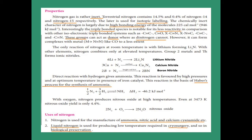When nitrogen reacts with oxygen, we get nitrous oxide, N₂O. Even at 3473 Kelvin, the yield is only 4.4 percent. Uses of nitrogen: it is used to produce ammonia, nitric acid, and calcium cyanamide. Liquid nitrogen possesses very low temperature, so it is used in cryosurgery and also in biological preservation.